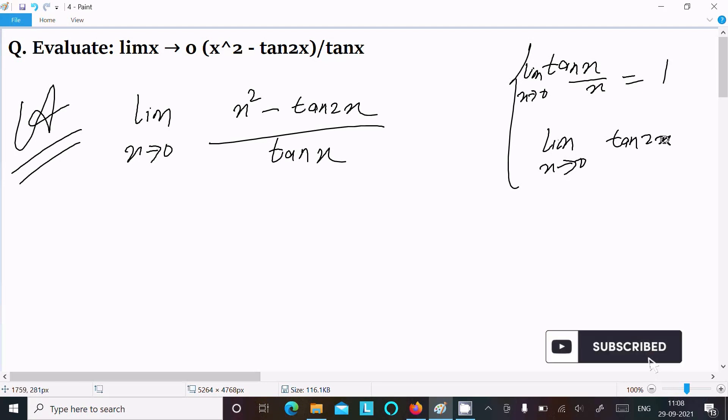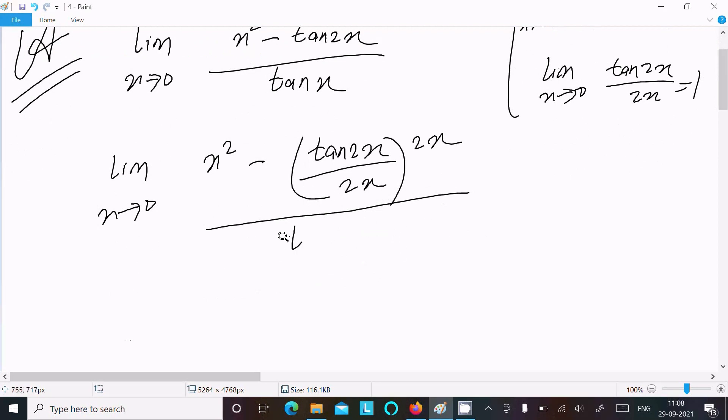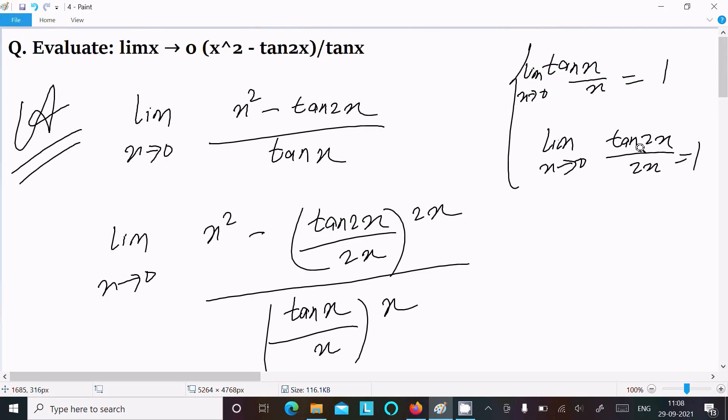tan2x divided by 2x, that is equal to 1. So here, limit x tends to 0, x squared minus tan2x. Dividing with 2x, obviously we need to multiply in the numerator with tan2x. The same here, tanx dividing with x, now multiplying with x.